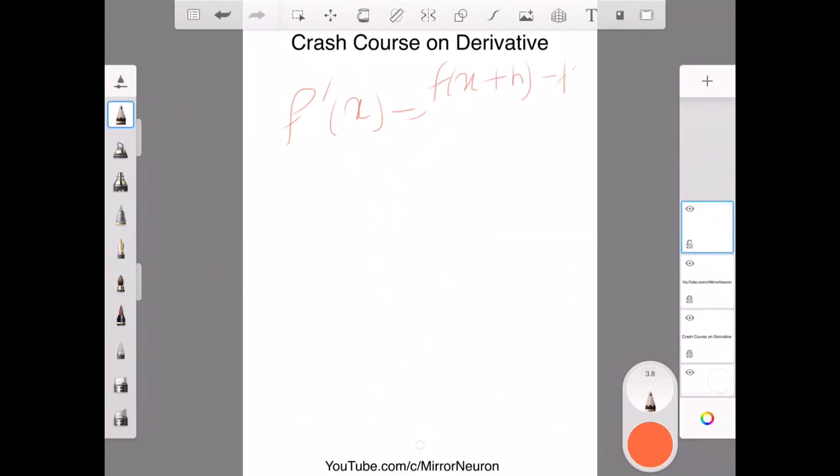So this can be written as f derivative of x equal to f of x plus h minus f of x divided by x plus h minus x, and this can be rearranged as, so this x and this x will cancel out.